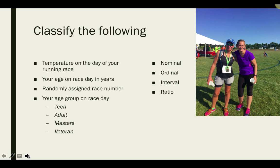And look at four variables that were collected based on that day. The temperature on the day of the race. Your age on race day in years. Your randomly assigned race or bib number. And your age group classification. Teen, adult, masters, or veteran. Take a moment and test yourself out. See if you can classify these. Hint, there is one of each variable.